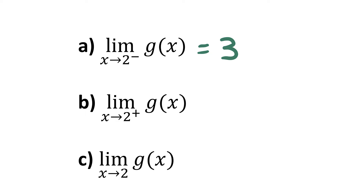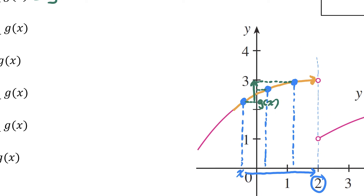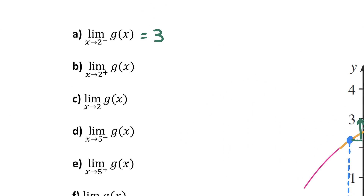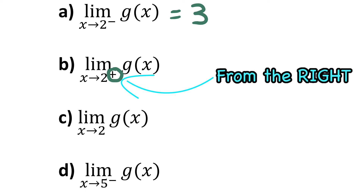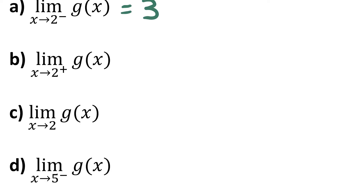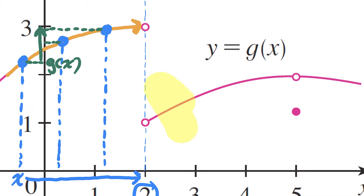It doesn't matter that the function doesn't exist at x=2 — we just care what is happening as x approaches 2, not what happens when x equals 2. Part B wants us to find the limit of g(x) as x approaches 2 from the right side. That's what the plus sign means. Let's go back to the graph and now look to the right of x=2.